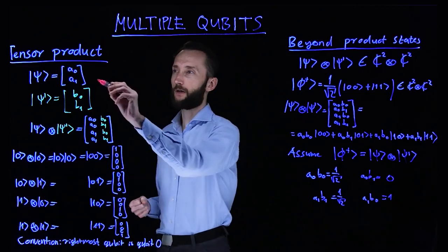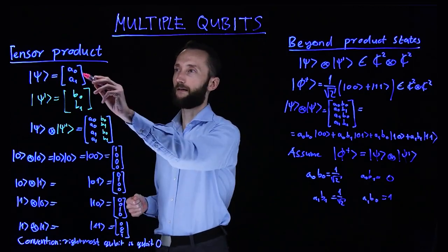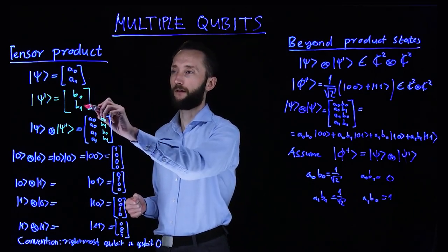So imagine that you have two quantum states, two cats. One has probability amplitudes a0, a1, and the second one has b0 and b1.